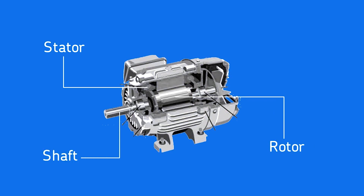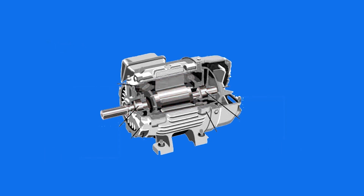The rotor has no electrical connections to the stator or the power source. Rather, the magnetic fields of the stator induce currents to flow in the rotor. These rotor currents create a magnetic field which interacts with the stator magnetic field to create the shaft rotation.